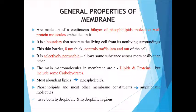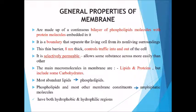The plasma membrane is selectively permeable, meaning it will only allow some substances to cross more easily than others. The main macromolecules in the membrane are lipids, proteins, and carbohydrates. The most abundant are the phospholipids that make up the phospholipid bilayer.